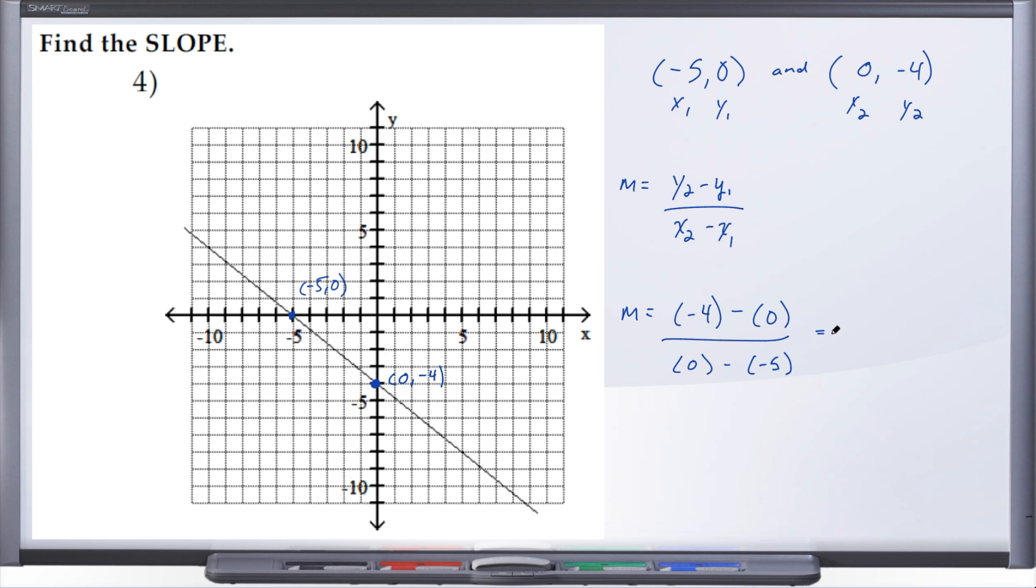So here we have -4 minus 0 over 0 minus a -5. So when we distribute that negative we get a plus 5, don't we? So 0 plus 5. And now finally here we have -4 minus 0, well that's just -4 over 0 plus 5, well that's just 5. And so our slope is -4/5.